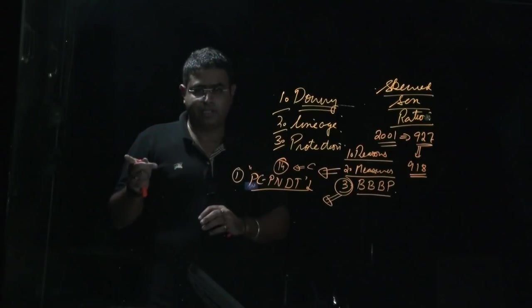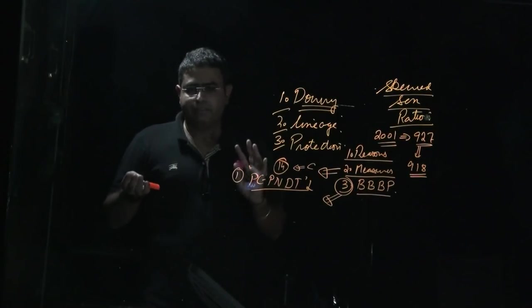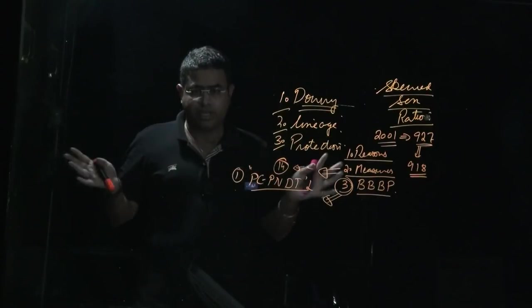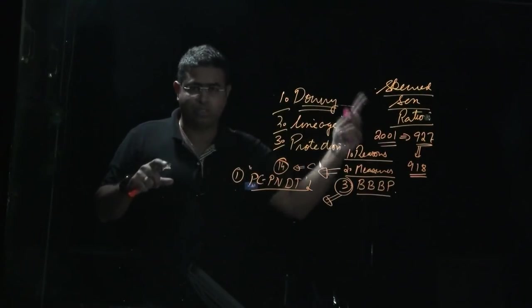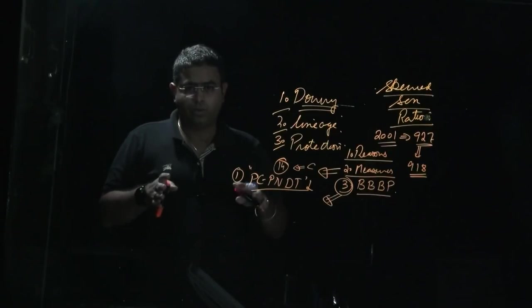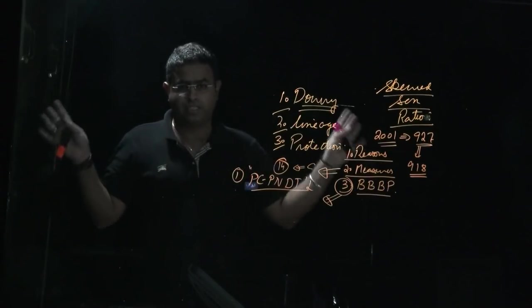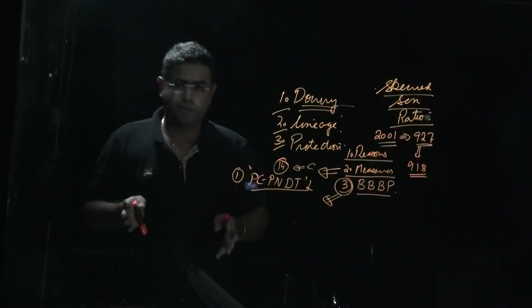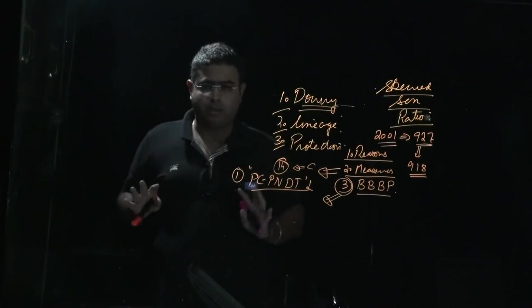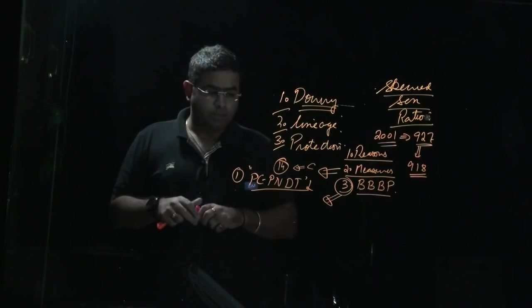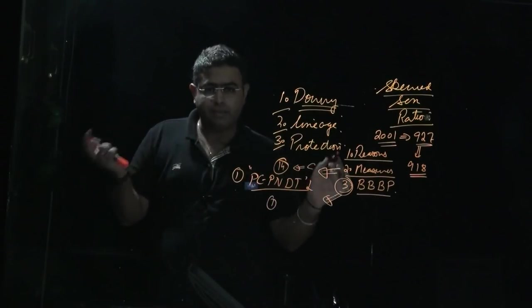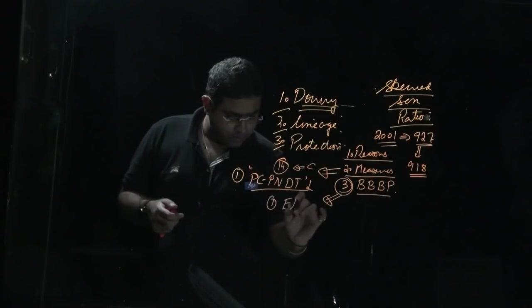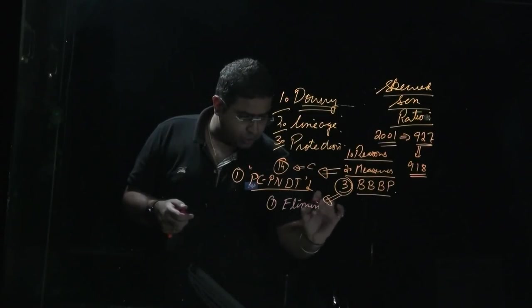This is one of the provisions. Earlier this was implemented in about 150 plus districts around India, and only those districts which were having skewed sex ratio. But right now its scope has been expanded to entire India. Now in entire India this program is implemented. This is the first thing - you need to actually save, there should be no elimination of the female child.